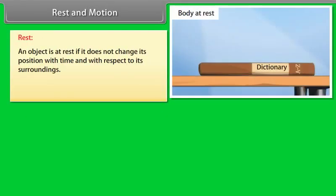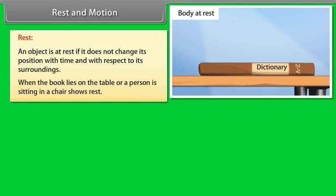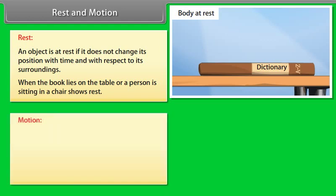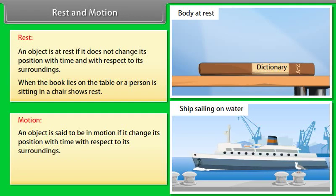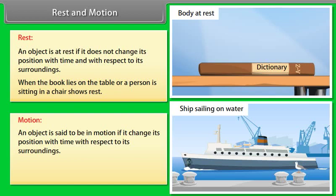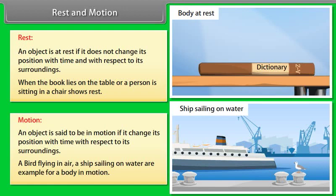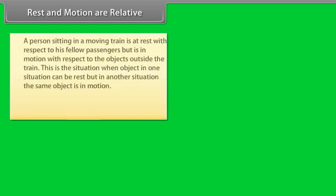Rest and Motion: An object is said to be at rest if it does not change its position with time and with respect to its surroundings. For example, a book lying on the table or a person sitting in a chair shows rest. An object is said to be in motion if it changes its position with time with respect to its surroundings. A bird flying in air or a ship sailing on water are examples of a body in motion.